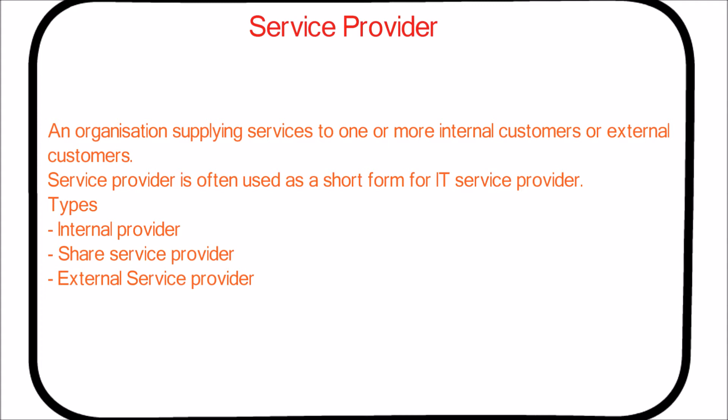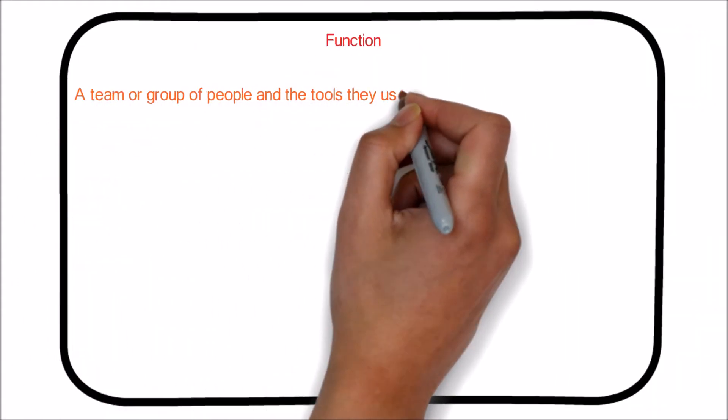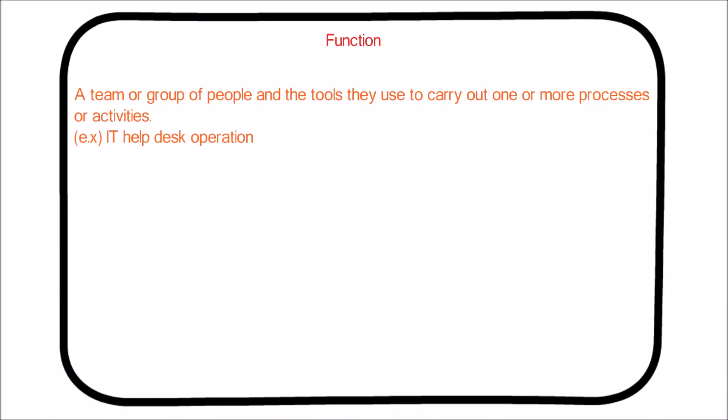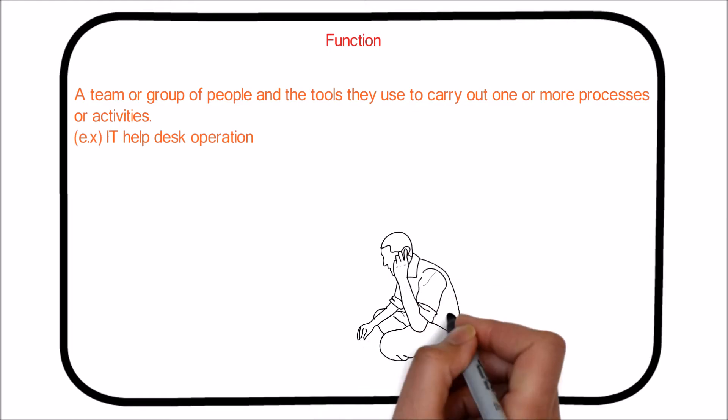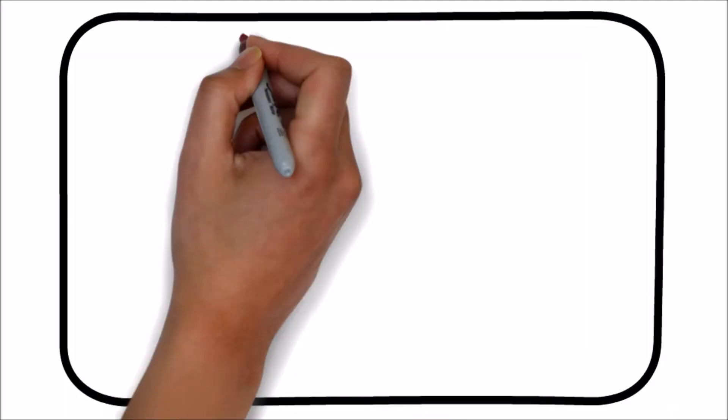The three types are: Internal Provider, Shared Service Provider, and External Service Provider. A Function is a team or group of people and the tools they use to carry out one or more processes or activities. An IT help desk operation would be a good example of a function.